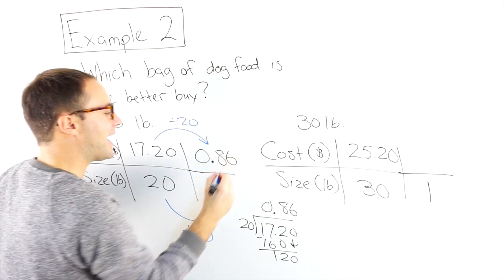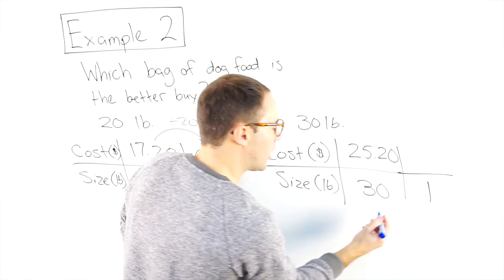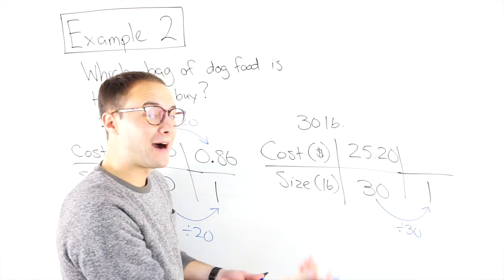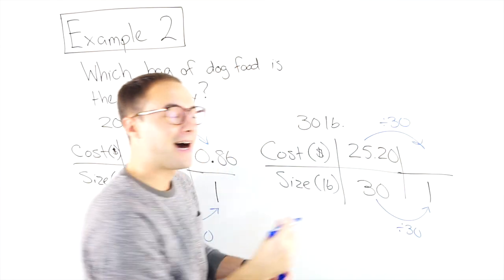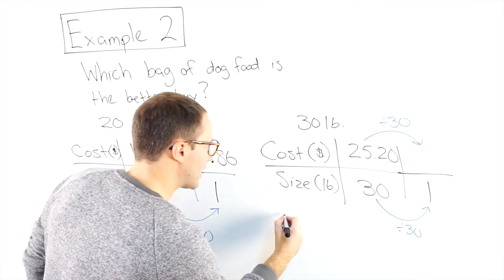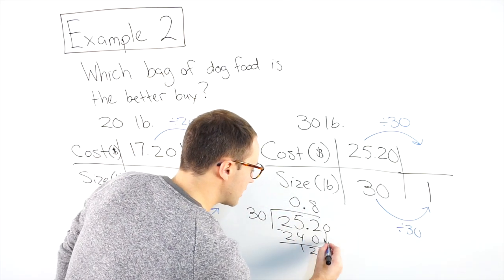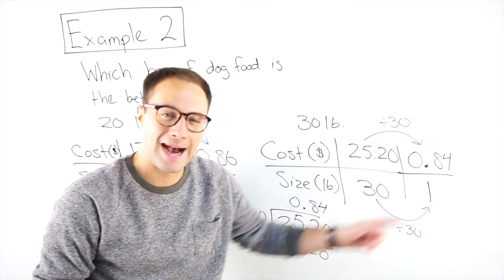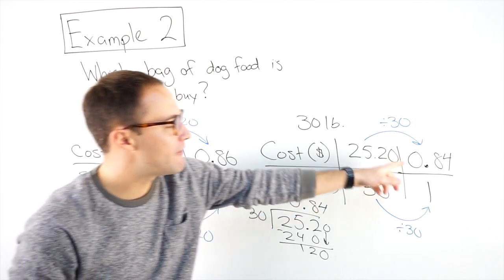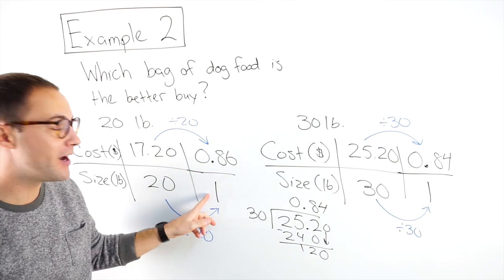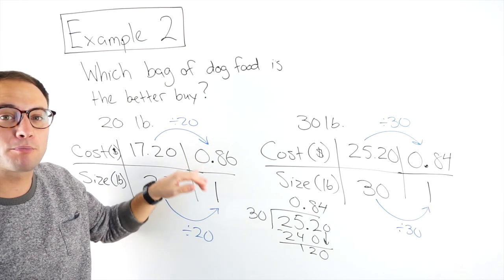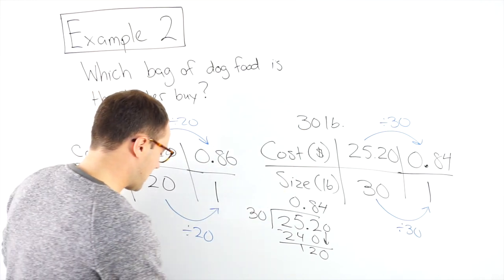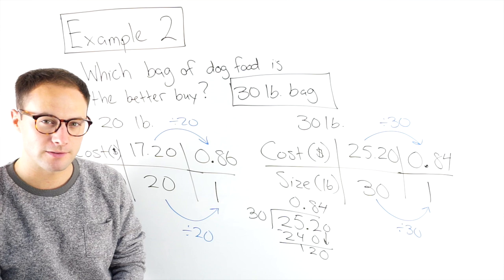So that costs 86 cents per pound. From 30 to one, I need to divide by 30. So I'm going to divide by 30 here. That's 0.84 or 84 cents per pound. Now that we're comparing both as unit rates, how much it costs per pound, you can see that the better buy is obviously going to be the 30 pound bag. And it's actually 2 cents cheaper per pound.